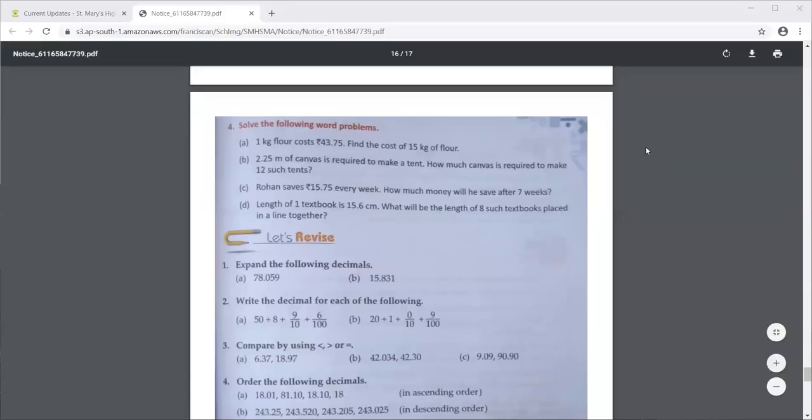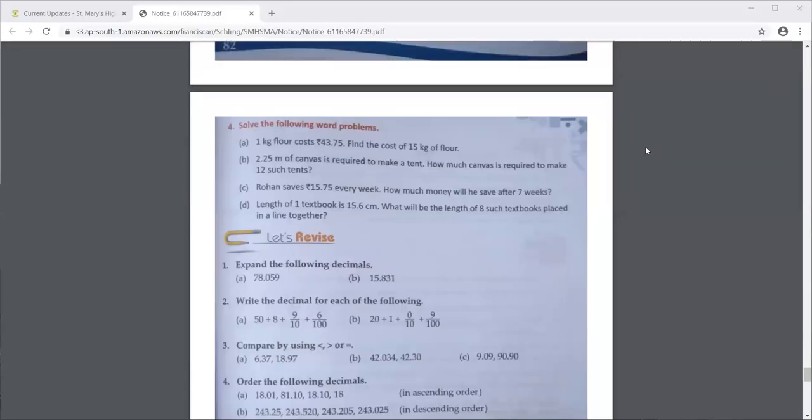Question number 4, first one. 1 kg flour costs so many rupees. Flour is aata. 1 kilo aata costs 43 rupees 75 paisa and you have to find out the cost of 15 kg of flour. So the cost of flour will become more. For 1 kg if it is 43 rupees 75 paisa, obviously for 15 kg it will be more.